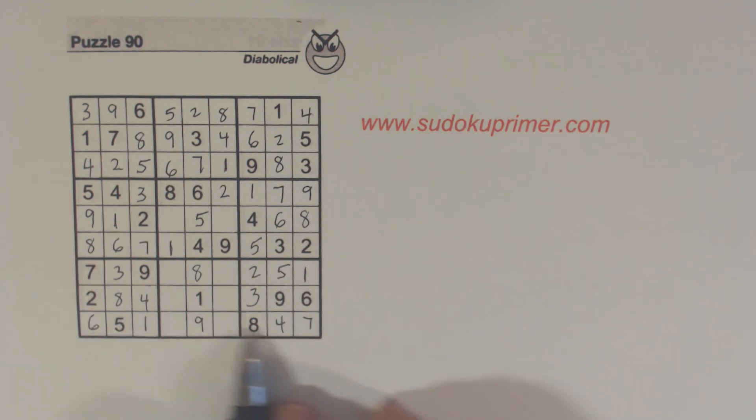And we've got a 2 8 here that we can solve. And let's look at this bottom row here. We're missing 2, 3, 2 and 3. We can solve those.